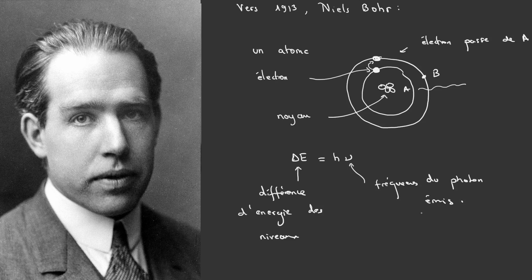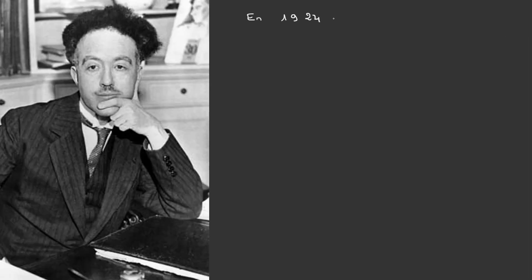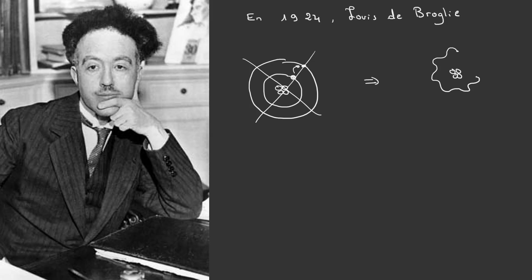especially because it did not consider the wave properties of particles. In 1924, Louis de Broglie brought a revolutionary idea. Electrons and all particles possess a wave-particle duality. They can be described both as particles and as waves, with a wavelength given by lambda equals h over p.